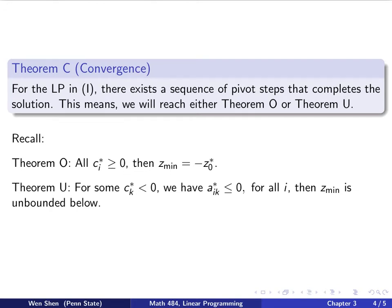Now, we have arrived at the main theorem. We call it theorem C, C for convergence. The statement of the theorem is the following. For the LP problem 1, there exists a sequence of pivot steps that completes the solution. What does it mean that it completes the solution? This means we will reach the criterion where we can use either theorem O or theorem U.